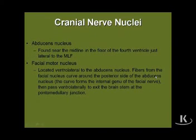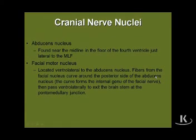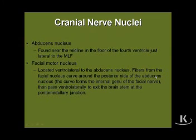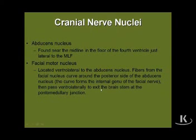Regarding the abducens nucleus: we know it's situated at the same level of the brainstem — the lower pons — as the facial motor nucleus. The key point is that the abducens nucleus is encircled by the fibers forming the internal genu of the facial nerve. So the fibers of the facial nerve do not exit directly from the brainstem ventrolaterally; instead, they sweep up and around the abducens nucleus before exiting the brainstem at the pontomedullary junction.